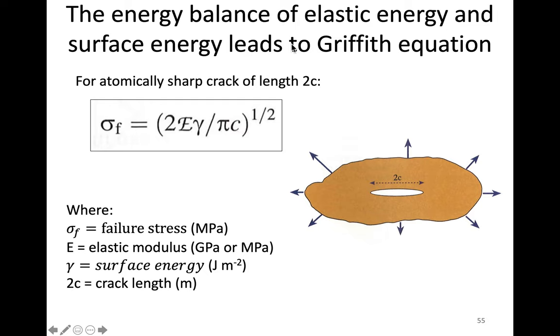For an atomically sharp crack of length 2c—this is an interior crack, and its total length is 2c because if it was on the surface it would only be half of this—the failure stress σ_f = (2Eγ/πc)^(1/2) is related to the elastic modulus E, the surface energy γ, and the crack length 2c. This is known as Griffith's equation, and it allows us to relate the length of a crack to when it will fail.